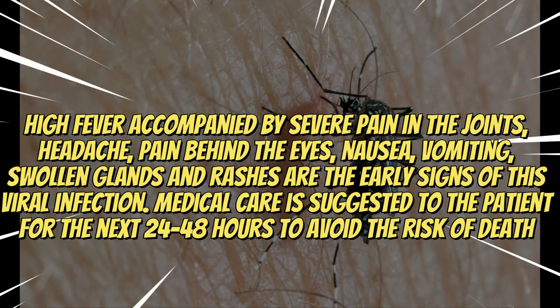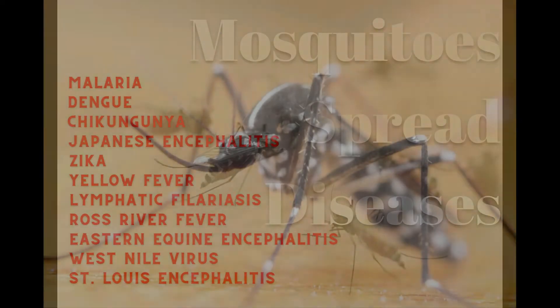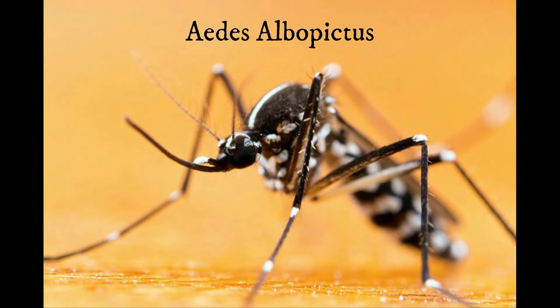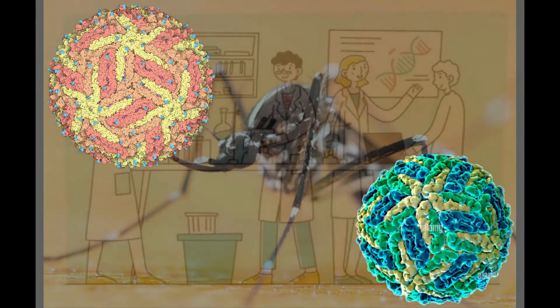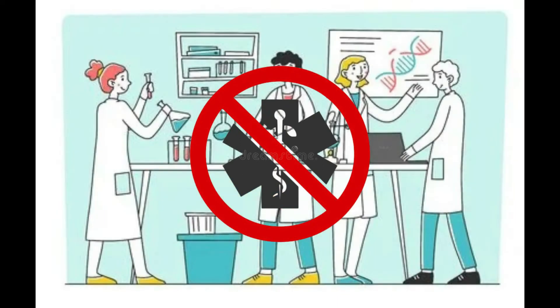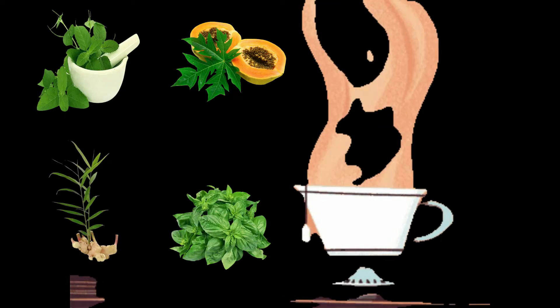Chikungunya is a mosquito-borne disease spread by the bite of the Aedes albopictus mosquito. The disease shares its signs with Zika and dengue and hence it can be misdiagnosed in areas where all of these diseases are found. There is no antiviral drug treatment for the disease, but you can drink lots of tea made from the leaves of tulsi, papaya, ginger, or basil. You can also try some chikungunya home remedies to cure the disease at its initial stage.